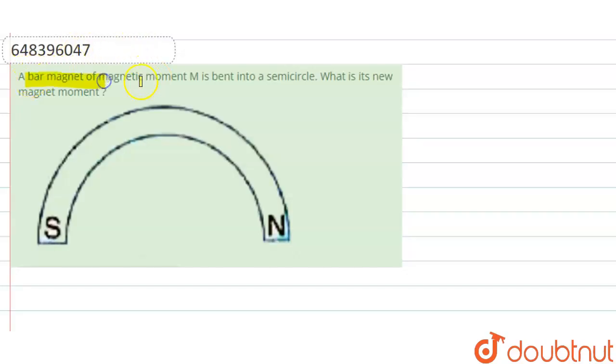A bar magnet of magnetic moment capital M is bent into a semicircle. What is its new magnetic moment?